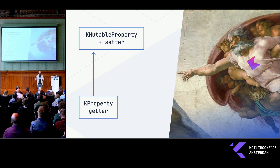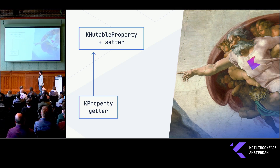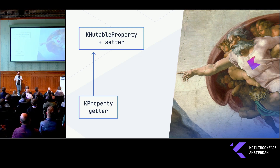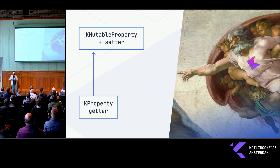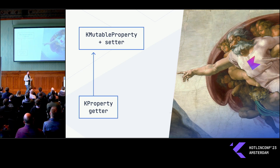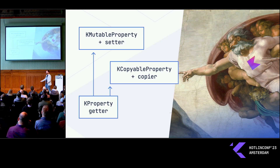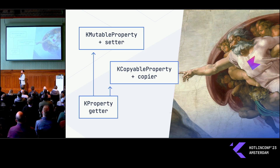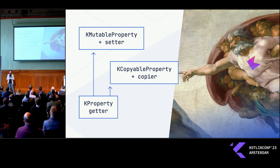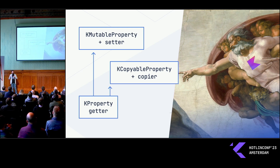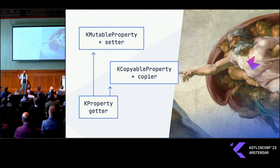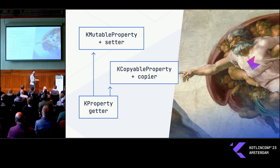What I would really love to do — and I say this because there might be some JetBrains people here — now we have properties, we can have references to properties, and we also have mutable property, which is a reference to a property we can also set. But what if we also had some kind of copyable property where this copier was given to us by the compiler? We could have most of this arrow optics framework from the compiler, which would actually solve most of the problem of having to generate all this code.